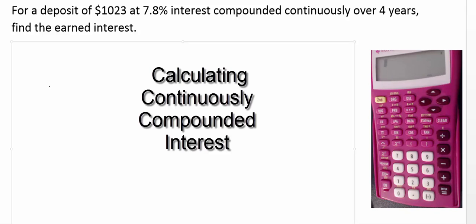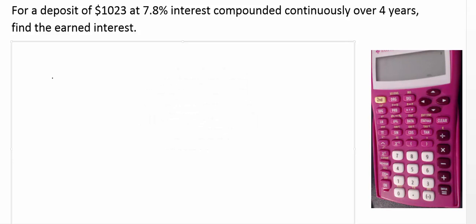So let's talk about how to calculate continuously compounded interest. Here's an example where we're told that there was a deposit of $1,023 at 7.8% interest, compounded continuously over four years, and we're asked to find the earned interest.